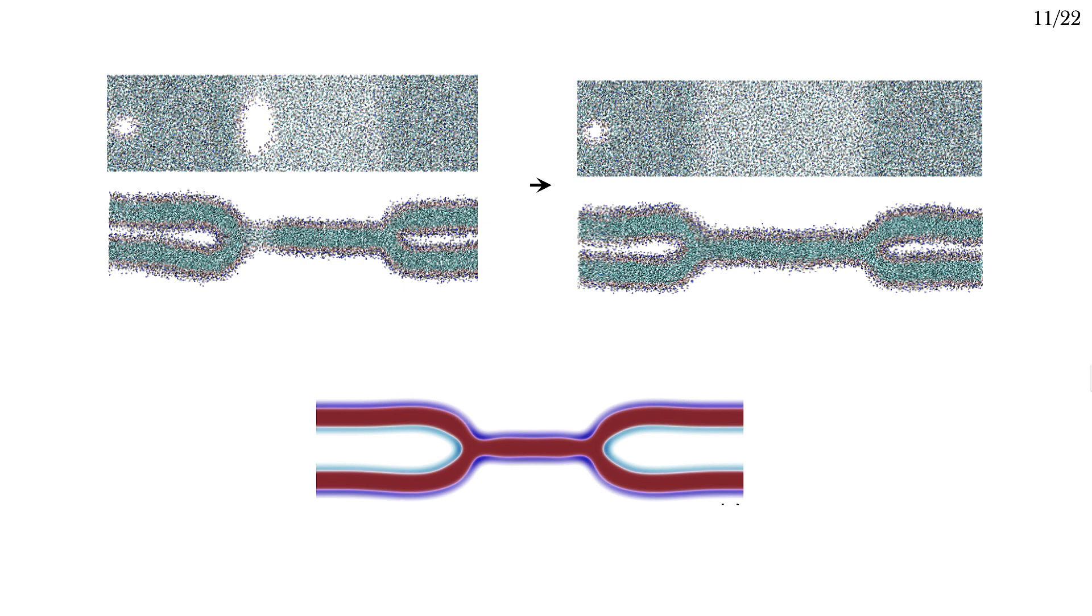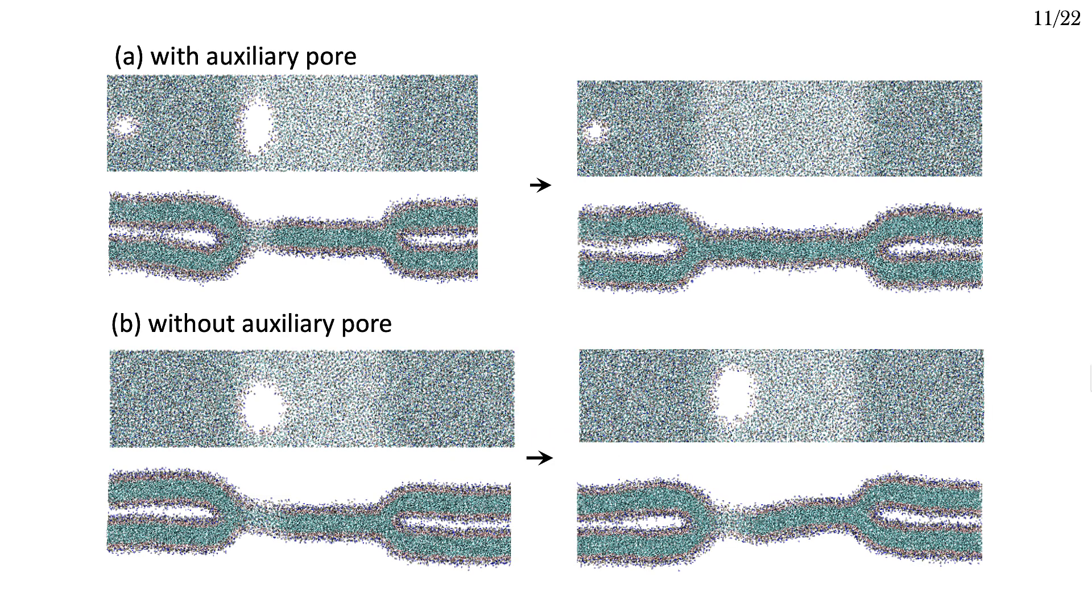The free energy barrier to a flip-flop is large enough that we expect maybe one lipid to cross the membrane in the entire time of the simulation, so we need something to increase the rate. If we remove this auxiliary pore and do the simulations without flip-flops, the large pore that we inserted becomes stable, as predicted.